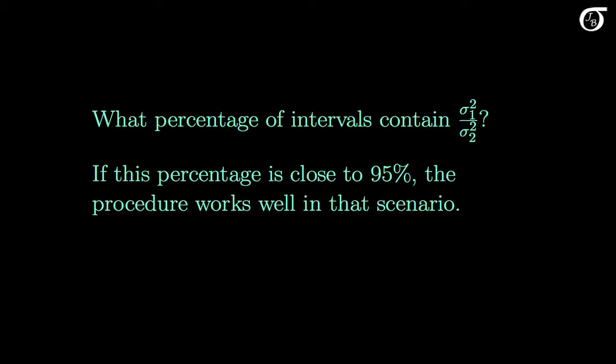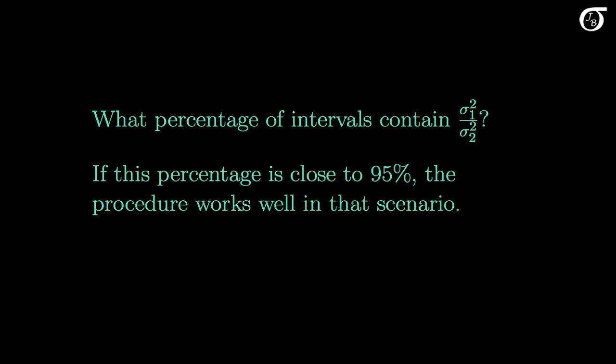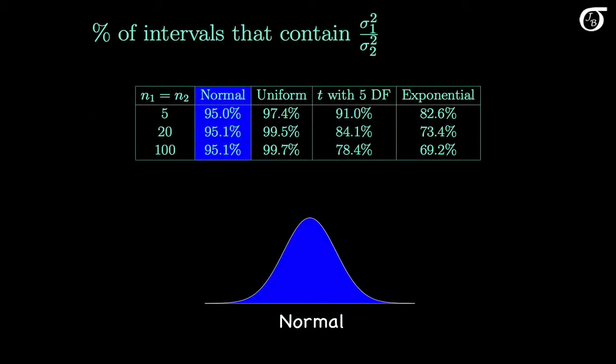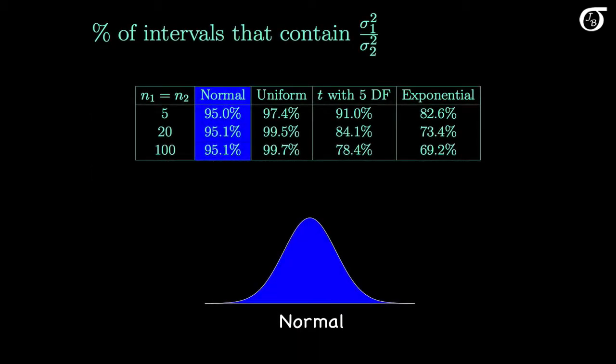I've chosen a 95% confidence level because that's our most common choice, and the overall results would be very similar for any confidence level. I'm going to look only at situations in which both populations have the same shape and equal sample sizes. N1 and N2 will both equal 5, 20, or 100.